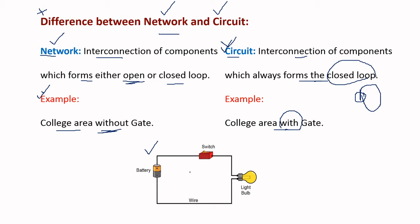In electrical terminology, a circuit has its starting point and ending point at the same location. If we remove the battery, it becomes a network. If we include the battery, it forms a closed loop and becomes a circuit. That is the basic difference between network and circuit.